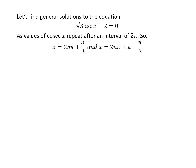Let us find the general solutions. As we know, the value of cosecant of x repeats after an interval of 2 times pi, so the general solutions are 2 times n times pi plus pi upon 3, and 2 times n times pi plus pi minus pi upon 3.